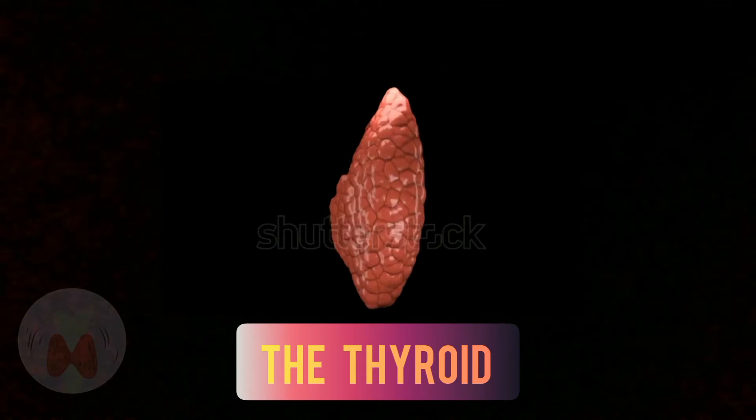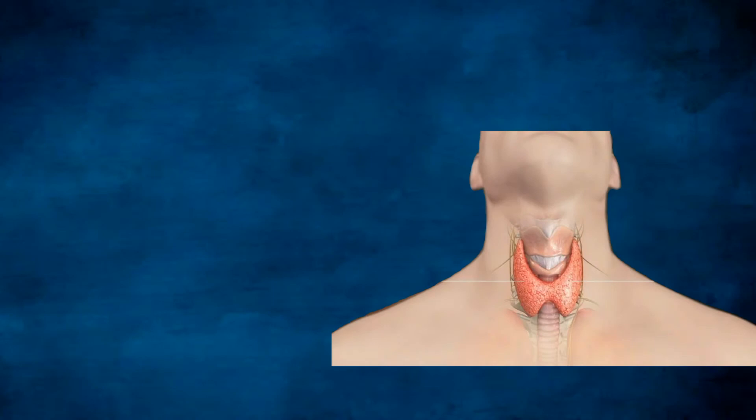Assalamu alaikum. In this video we are going to discuss about the thyroid gland and its disorders. The thyroid is an endocrine gland in the neck consisting of two lobes connected by a thin band of tissue called the thyroid isthmus.